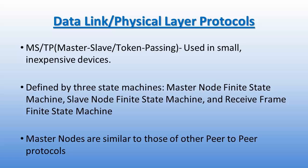A device is either a master node or a slave node. MSTP master nodes are similar to those of other peer-to-peer protocols. At power-up, each master node waits for a time slot based on its MAC address, ranging from 0 to 127, to begin searching for peers. When a peer is found, that token is passed to the peer and the other peer begins looking for its peer. Once a node has its peer identified, it participates in token passing and only searches for a peer every 50 token passes.